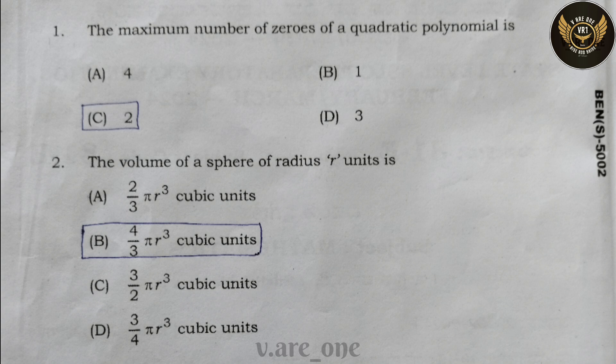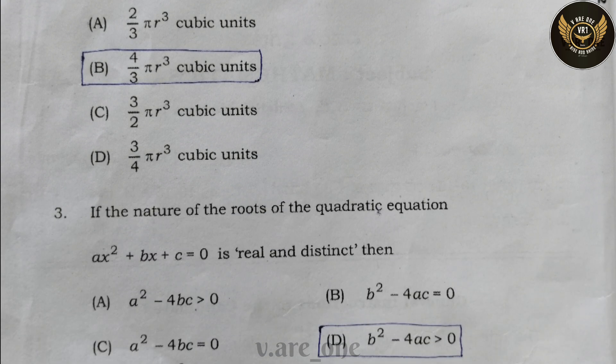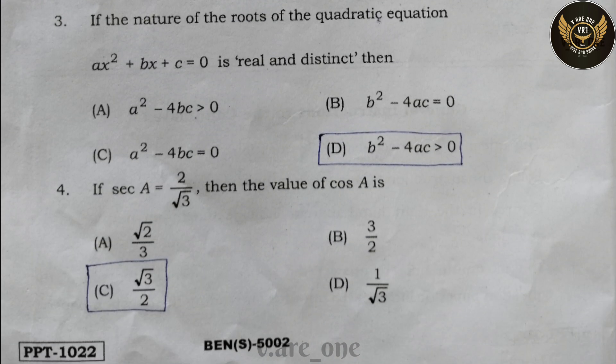The volume of a sphere of radius r is 4/3 π r³ cubic units. Third question: if the nature of the roots of the quadratic equation ax² + bx + c = 0 is real and distinct, then the correct answer is option D.